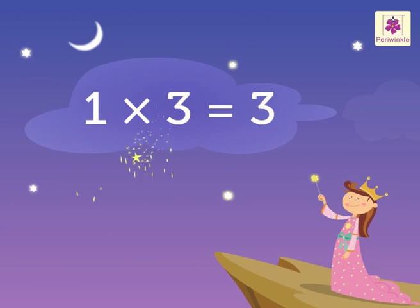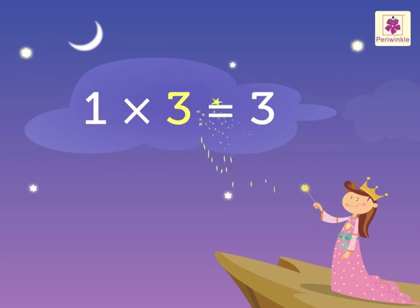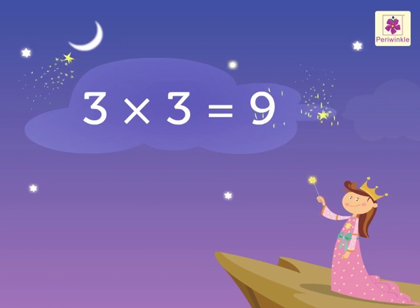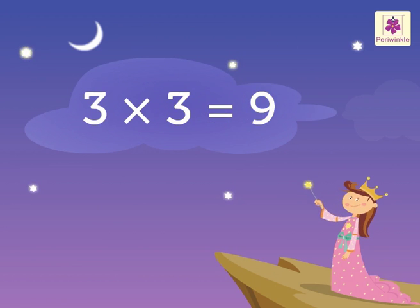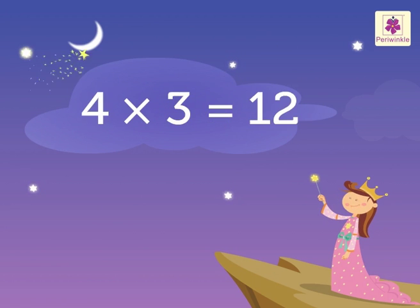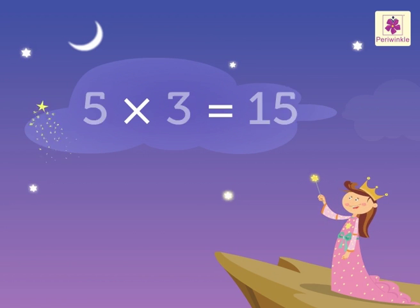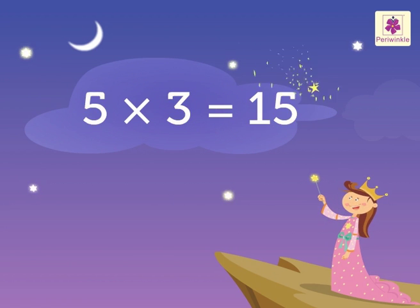1's 3 is 3, 2 3's are 6, 3 3's are 9, 4 3's are 12, 5 3's are 15.